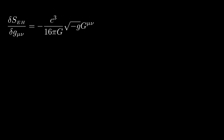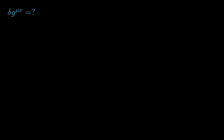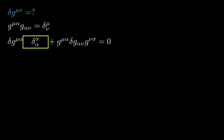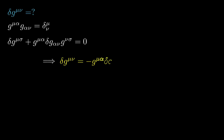Before we can show this main result, we'll first need to derive a few useful relations. First, we need the variation of the inverse metric. This follows from the identity G upper mu alpha, G lower alpha nu equals delta mu nu. By varying this identity we have the following result. We can now multiply through by the inverse metric G upper nu sigma. The highlighted terms yield the Kronecker delta, which in turn turns the alpha index into a sigma. After renaming some of the indices, this is our result, expressing the variation of the inverse metric in terms of the variation of the metric.